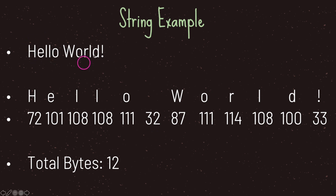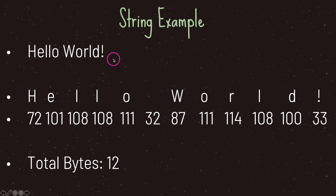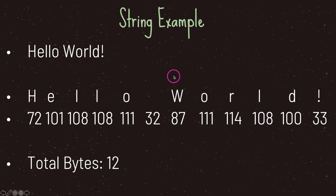If we represent how much memory the string "Hello World!" takes using ASCII or Unicode UTF-8, we get twelve bytes — because each character takes up one byte and we have twelve characters, including the space. Counting them: one, two, three, four, five, six, seven, eight, nine, ten, eleven, twelve.